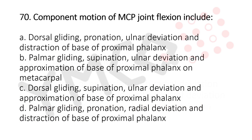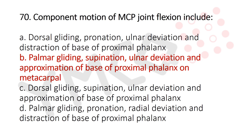Question 70: The component motion of MCP joint flexion includes — Option A: dorsal gliding, pronation, ulnar deviation and distraction of the base of the proximal phalanx; Option B: palmar gliding, supination, ulnar deviation and approximation of the base of the proximal phalanx on the metacarpal; Option C: dorsal gliding, supination, ulnar deviation and approximation; Option D: palmar gliding, pronation, ulnar deviation and distraction. The answer is Option B, palmar gliding, supination, ulnar deviation and approximation of the base of the proximal phalanx on the metacarpal.